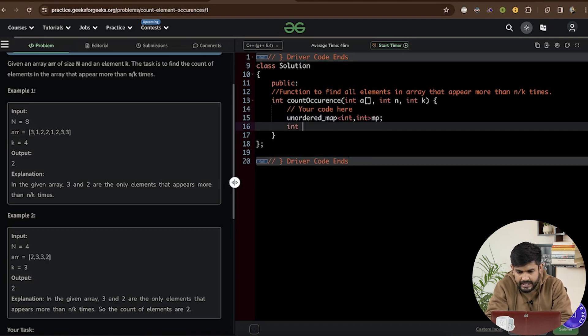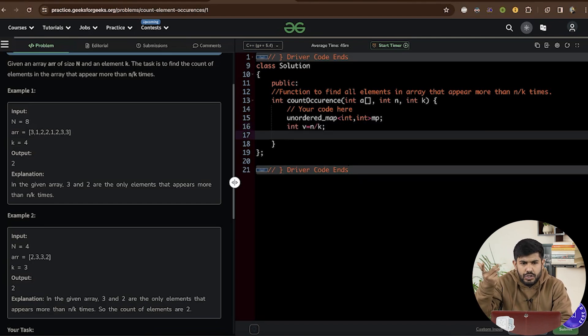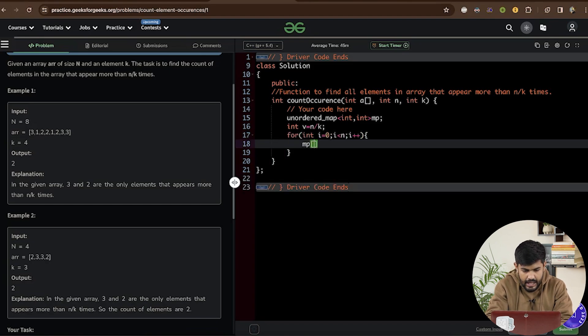And then I would be getting the value. So v is equals to N divided by K. It would be already narrowed down to the integer value. And for int i is equals to zero, i is less than N and i plus plus.